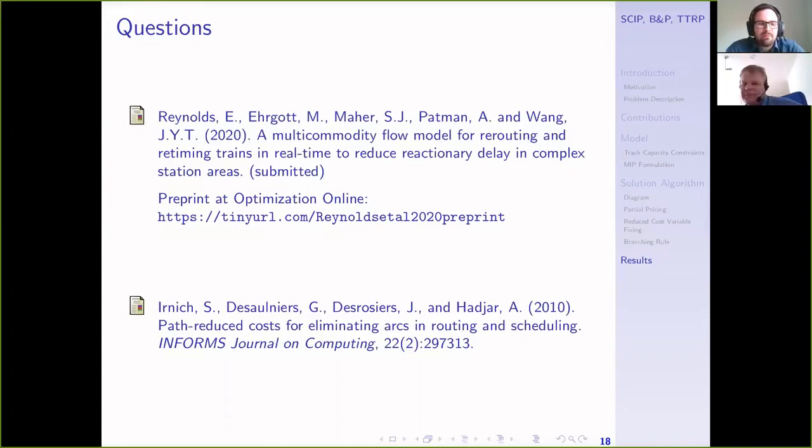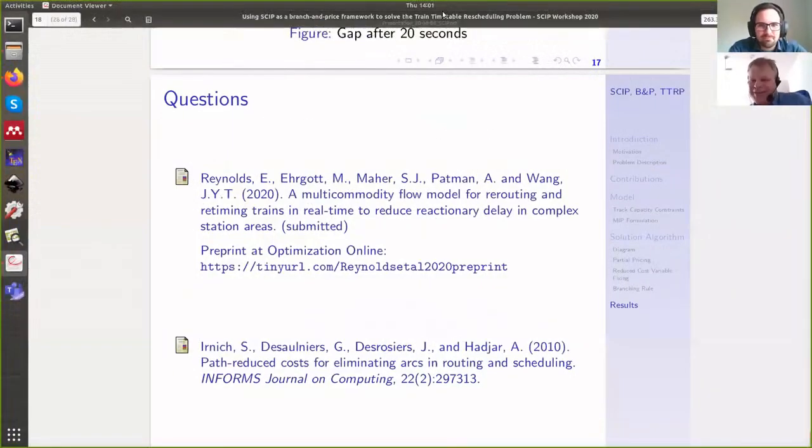We did look at trying to use heuristics to generate multiple columns at once, but to be honest the sub problem gets solved pretty quickly so it's not really worth it. One final quick question. Is there a path to deployment at national rail? Hopefully, but it's very long as usual, unfortunately. Okay, so I already said thanks to the speakers and we have a 15 minute break now. See you then.